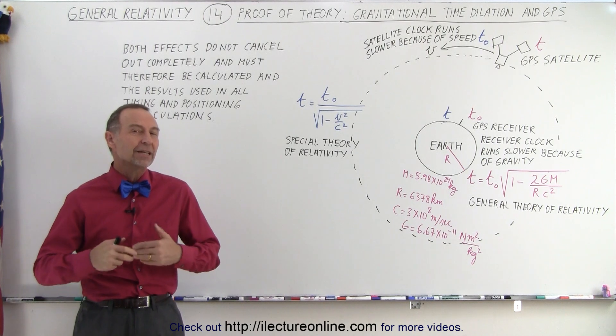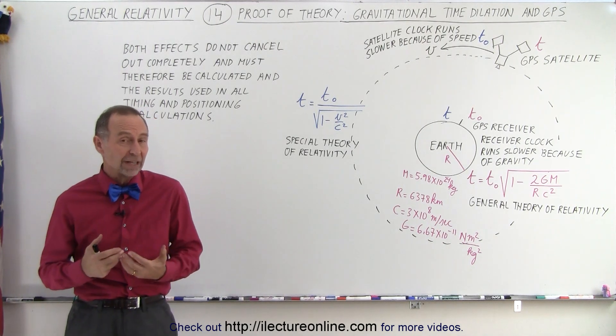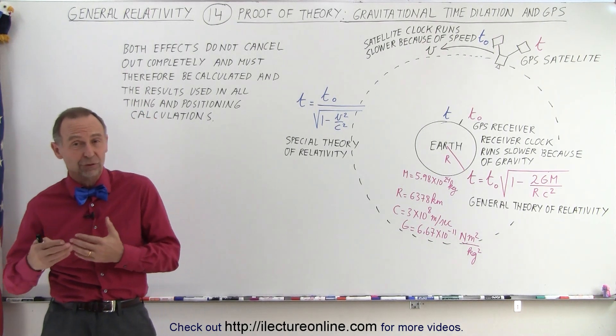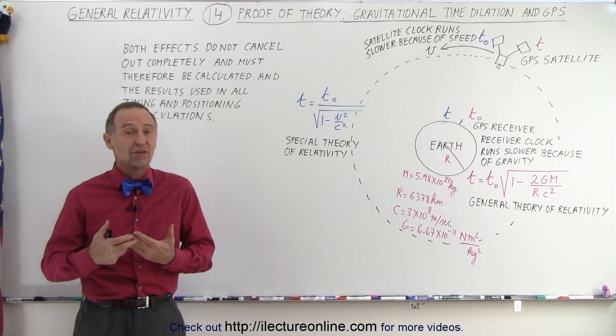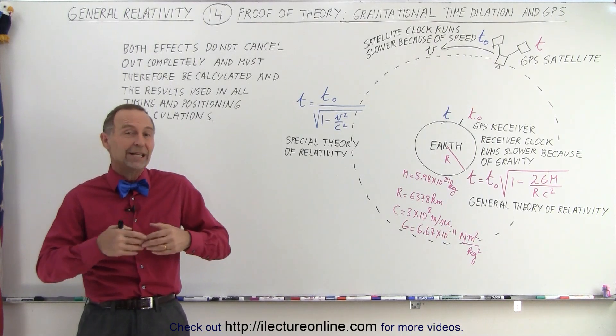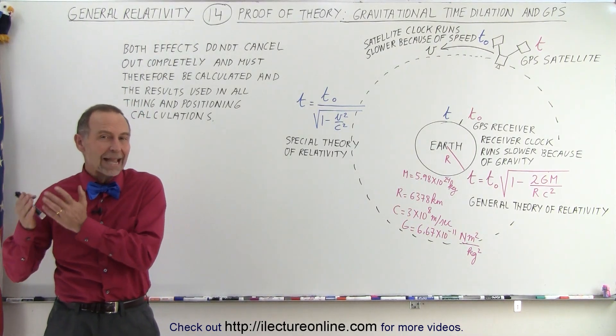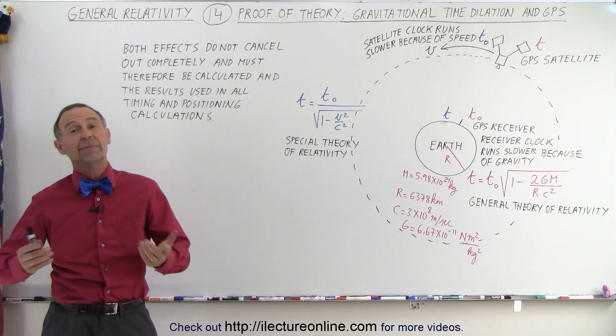It turns out that if we didn't account for the gravitational effects as well as the relativistic effects due to high speeds of the satellites, we would not be able to utilize GPS. We would not be able to find ourselves or any object that we're looking for accurately with GPS. So let me explain.